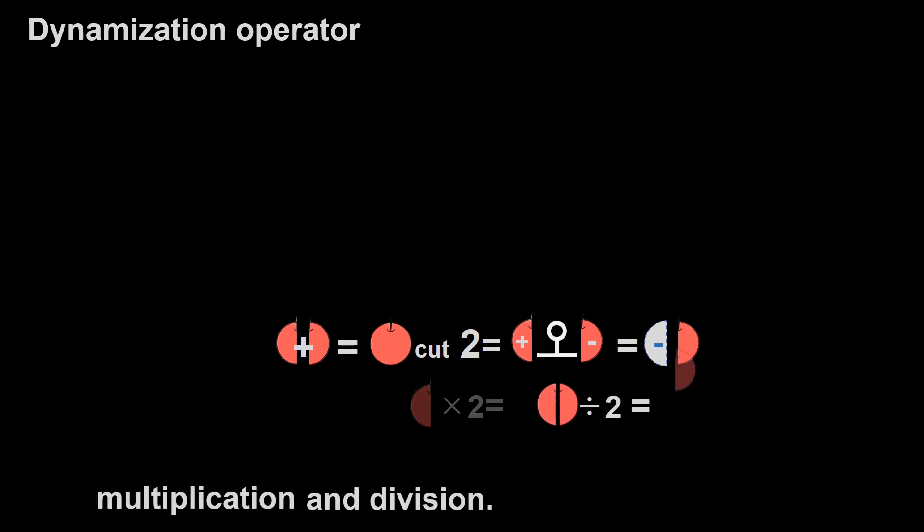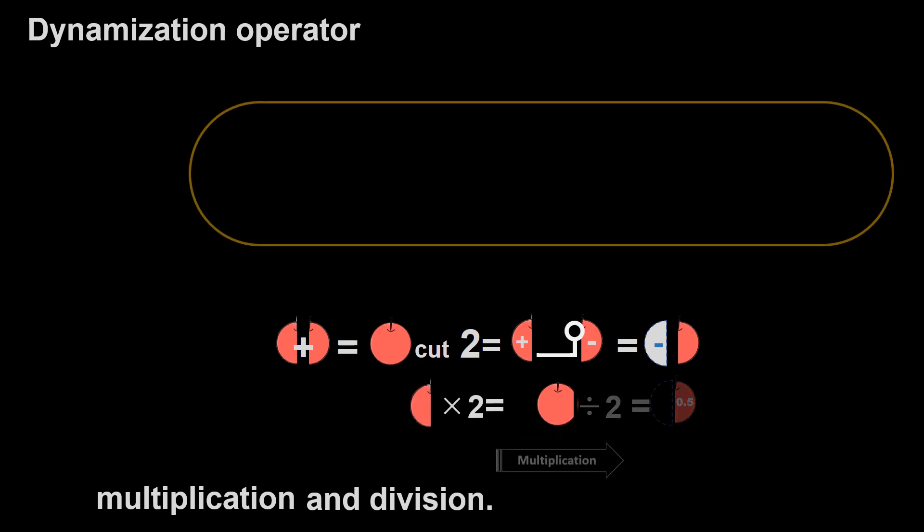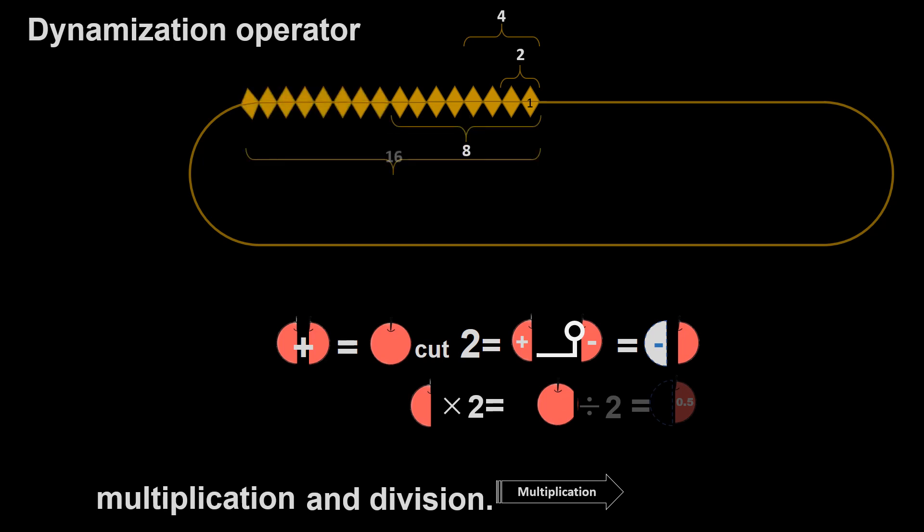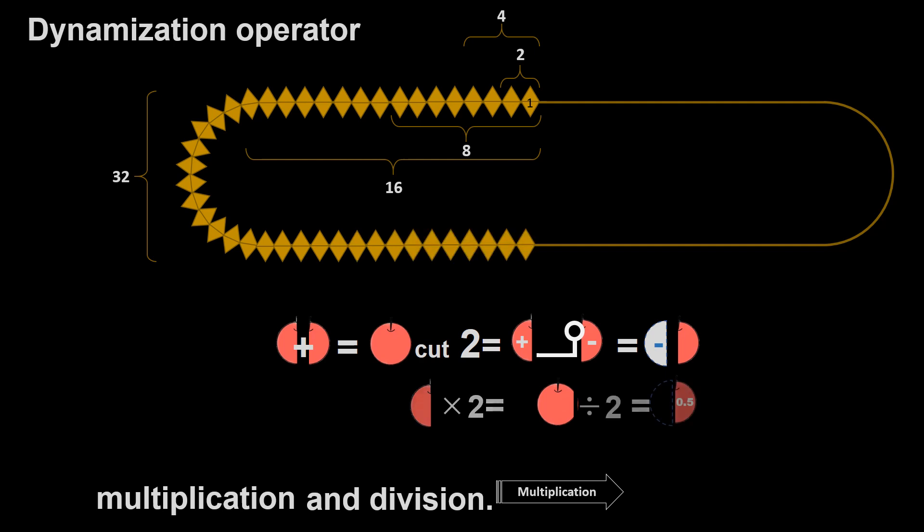Multiplication and division. Multiplication increases the number of additions at the rate that the break of the Mitsuyoshi operator moves to the right: 2, 4, 8, 16, 32 towards to infinity.